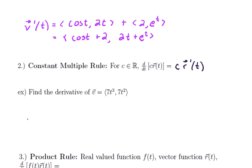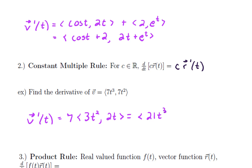The derivative here — we can bring that 7 out in front and then take the derivative of t³, which is 3t², and the derivative of t², which is 2t. The final answer would be 21t² in the first component and 14t in the second. There may or may not be a reason to pull that constant out in front, but it is a property you may find useful for particular problems.